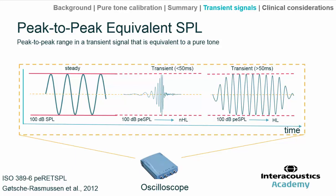Some transient signals used in evoked potentials are actually longer than 50 milliseconds — for example, commonly used slightly longer duration signals for N1P2 cortical evoked potentials, auditory late responses, and so on. In these cases, they can be calibrated and referenced to normal pure tone reference equivalent threshold sound pressure levels, and the usual dB HL label is indeed used.